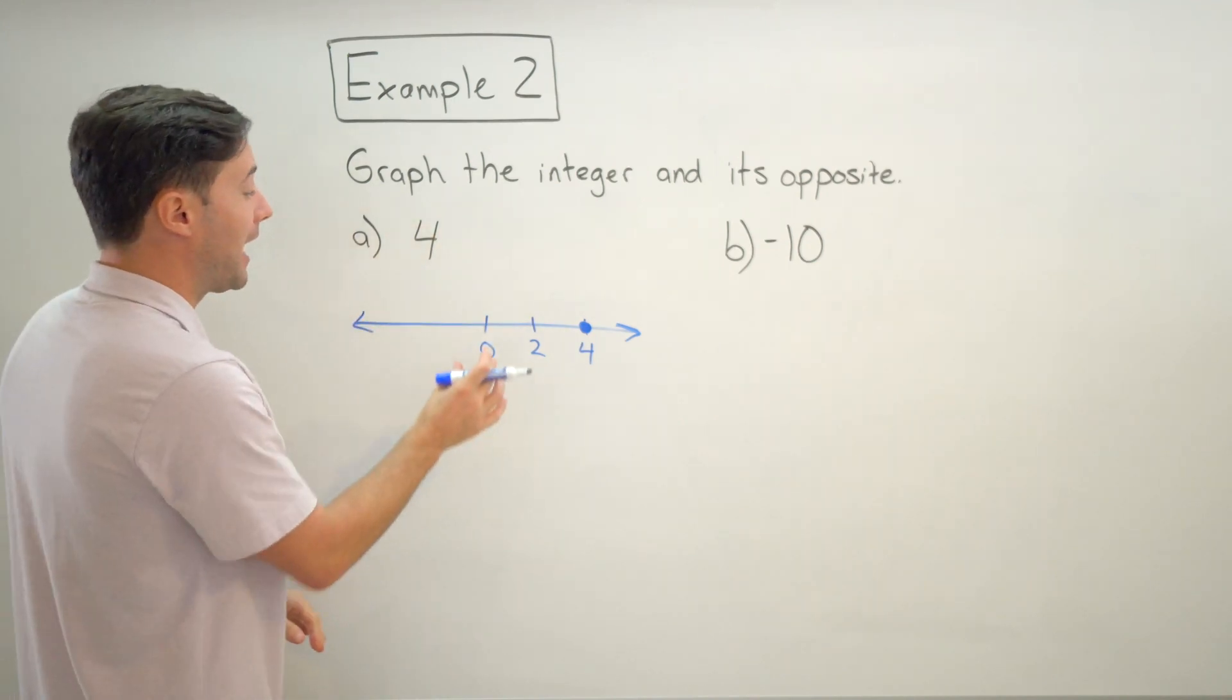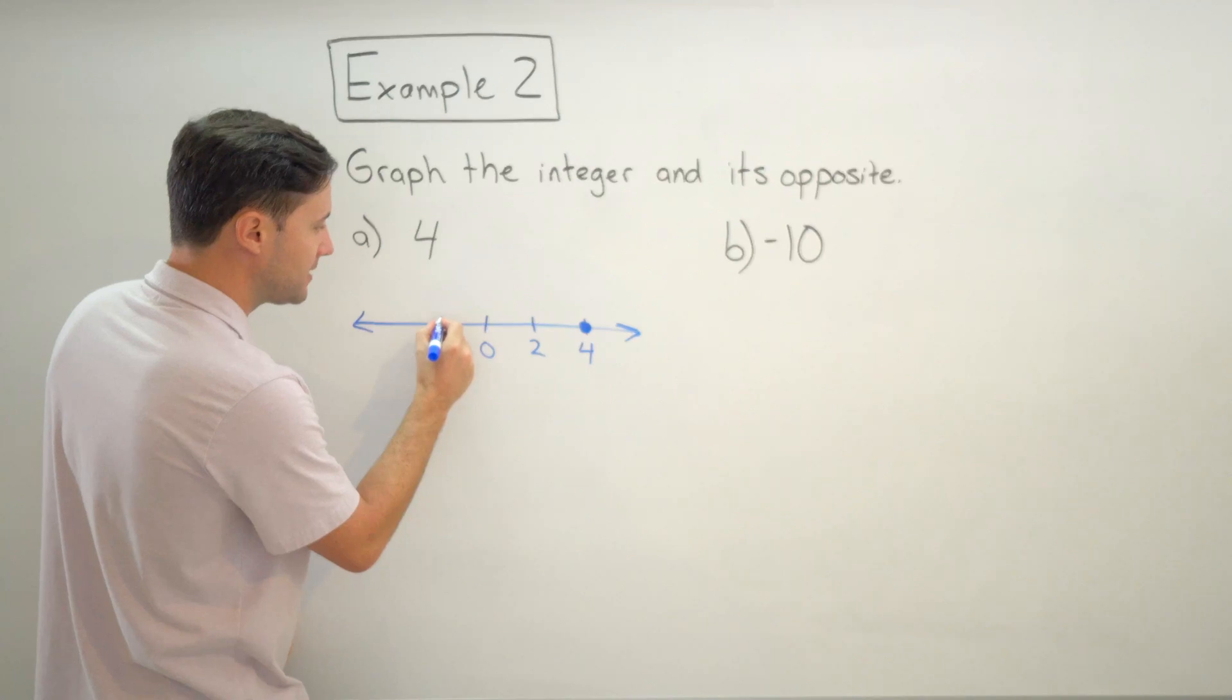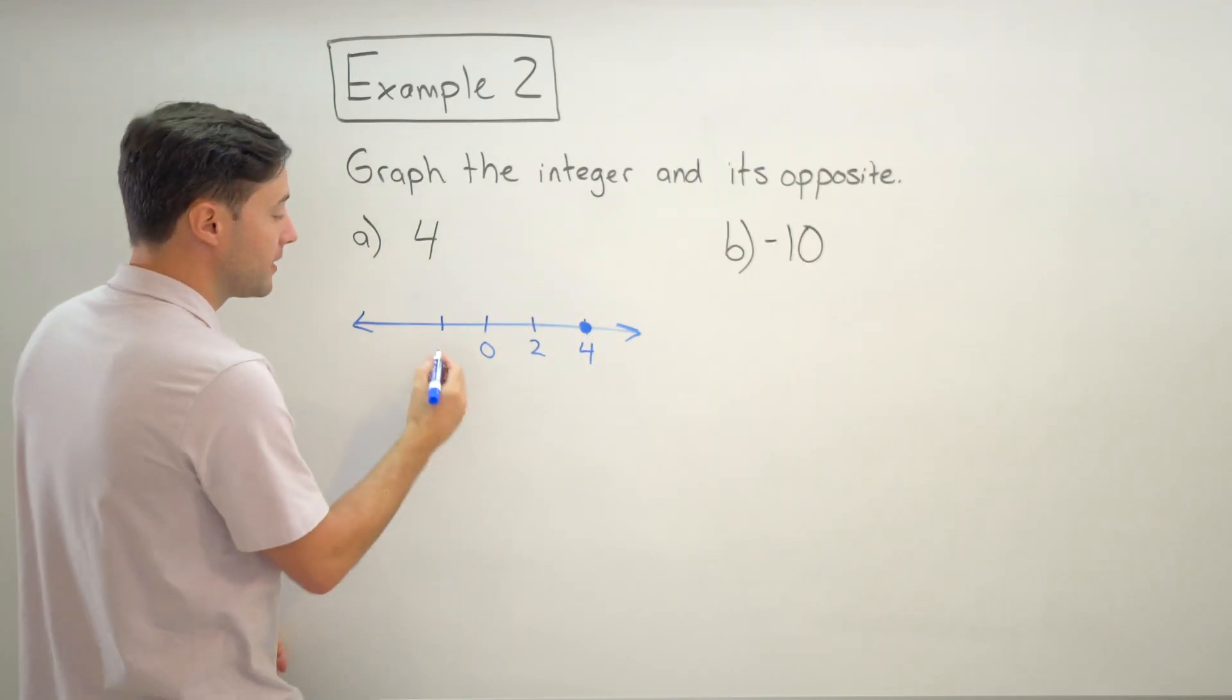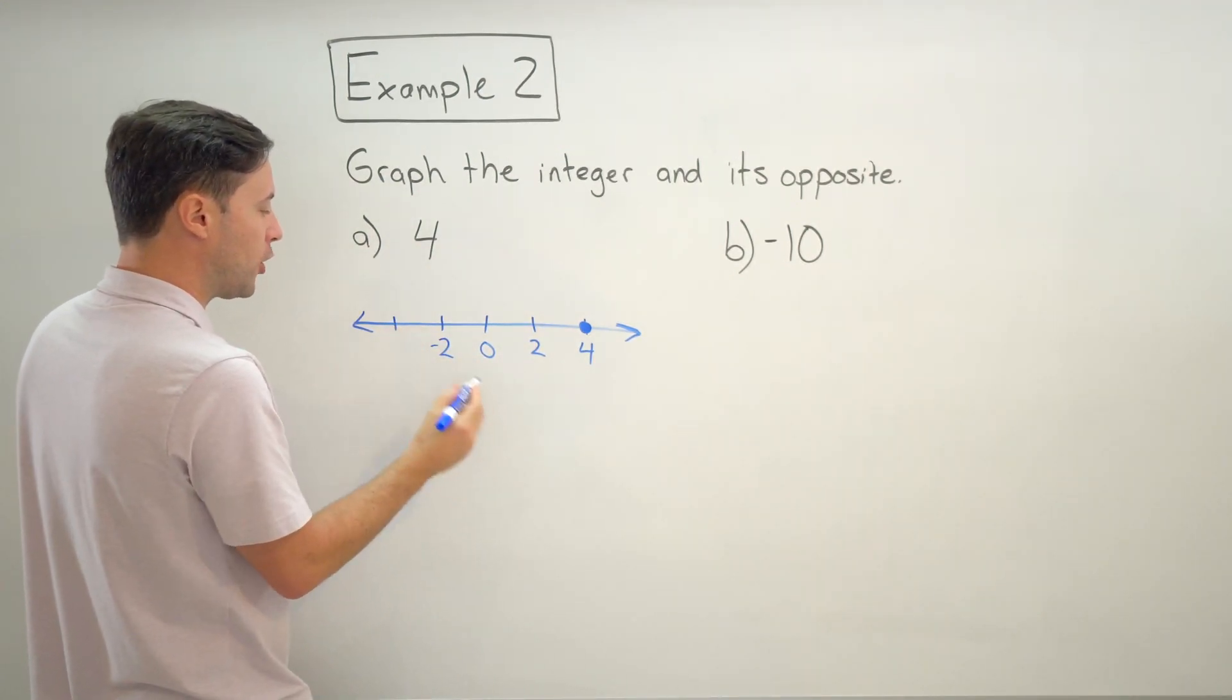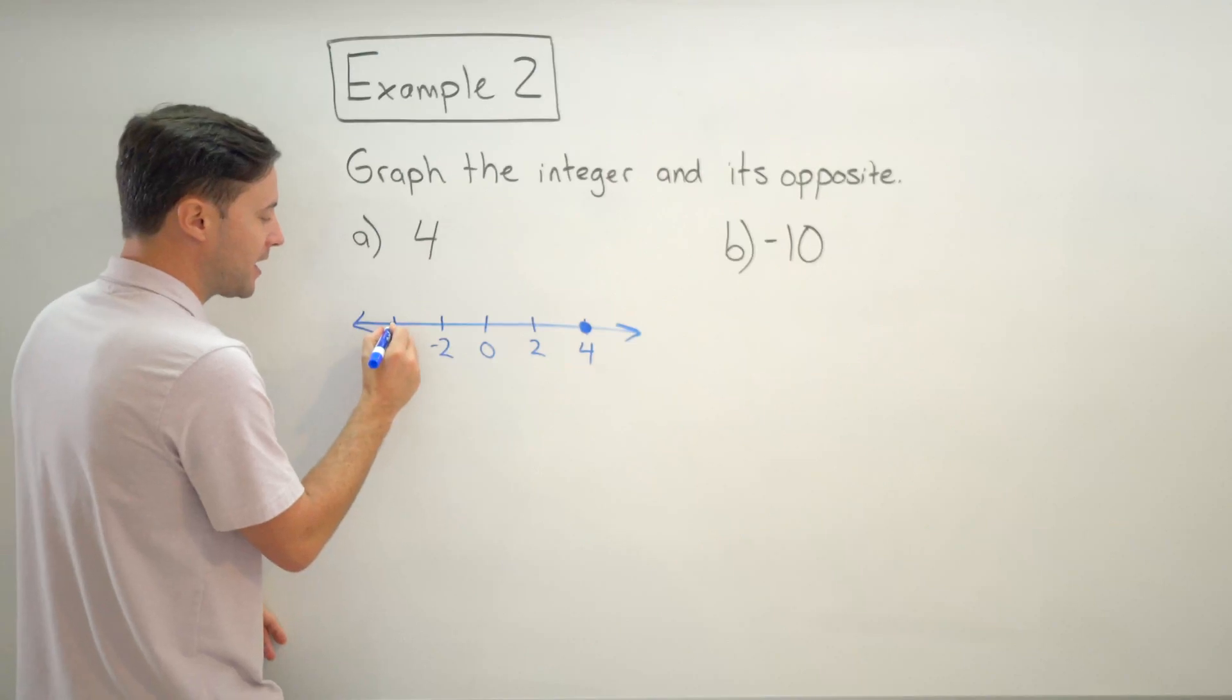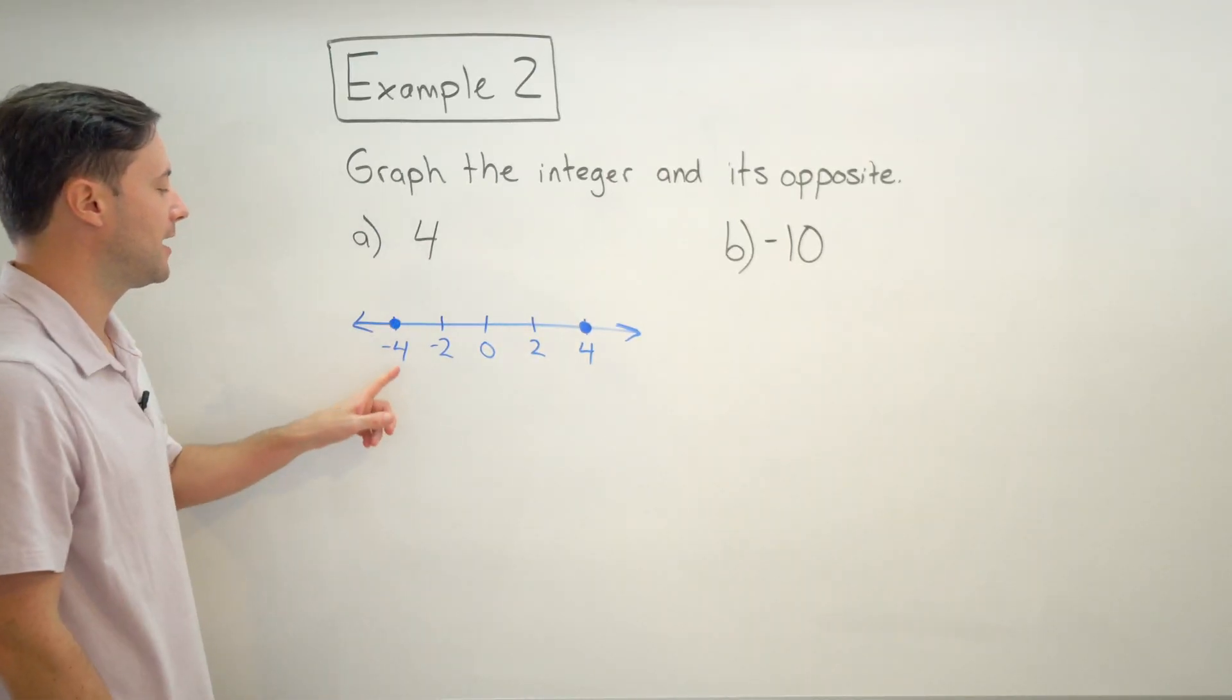All right, so I graphed four. Now I got to graph the opposite. I'm counting by twos, so I need to be consistent, make sure my spacing is the same. So if I'm going left now, now I'm in the negative integers, so this is not going to be two, this is negative two. And then keep going, the next would be negative four. So I graphed four already, now it's time to graph negative four, so I put a point on the number line and make sure it's labeled.